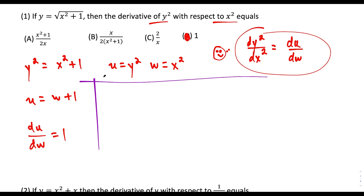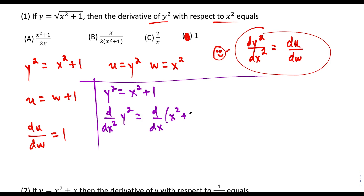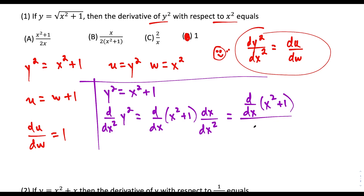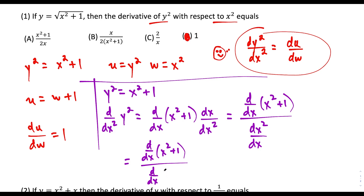There is an alternate method. Starting from y² equals x² plus 1, we can find this derivative in one shot without substitution. We take d/d(x²) of both sides, but on the right side we use the chain rule: take the derivative with respect to x of x² plus 1, then tack on dx over dx². Rewriting, we get the derivative with respect to x of x² plus 1, divided by the derivative with respect to x of x². The derivative of the top is 2x and the bottom is also 2x, so this simplifies to 1 — giving us choice D.